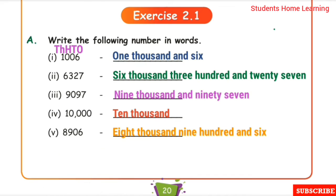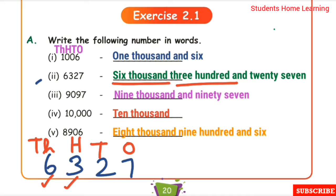Next one: 6,357. Let's write the place values. 7 is in ones place, 5 is in tens place, 3 is in hundreds place, 6 is in thousands place. Thousands place: 6,000. Hundreds place: 300. Tens and ones place: 57. The answer is six thousand three hundred and fifty seven.